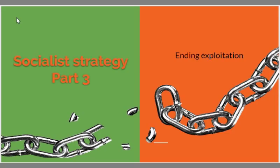I'm continuing my series of talks on socialist strategy in the UK. Previous ones looked at issues like financialization of the British economy and the ruses that the rich used to avoid taxes and how these tax loopholes could be plugged. I'm now turning to what used to be the core of the socialist message: how to end exploitation.